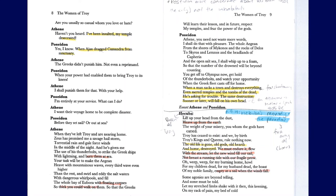Athena says: 'Haven't you heard? I've been insulted and my temple has been desecrated.' Notice how the gods only act here when they've been personally insulted or personally affronted. Poseidon says: 'Yes, I know — when Ajax dragged Cassandra from sanctuary, the Greeks didn't punish him — not even a reprimand.' Again we see the corrosion of morality on the part of the Greek army, which reflects what happened with the Athenian army in Melos. Athena: 'When your power has enabled them to bring Troy to its knees, I shall punish them for that, with your help.' 'I'm entirely at your service. What can I do?' 'I want their voyage home to be a disaster — before they set sail or out at sea. When they have left Troy, Zeus has promised me a savage hailstorm, torrential rain and gale-force winds in the middle of the night, and he's given me the use of his thunderbolts to strike the Greek ships with lightning and burn them at sea.' A nice juxtaposition there — burning at sea, fire and water.